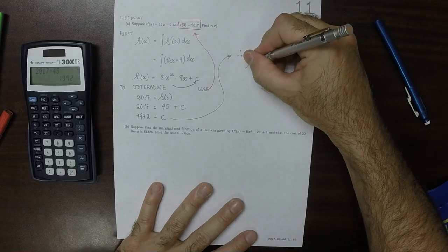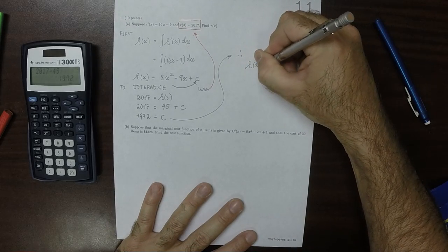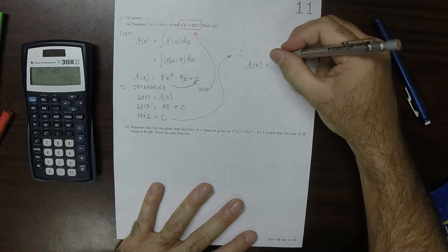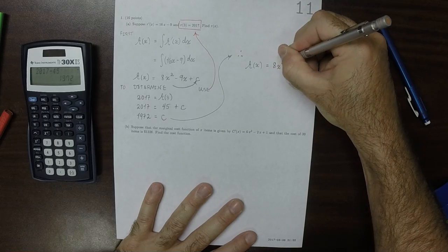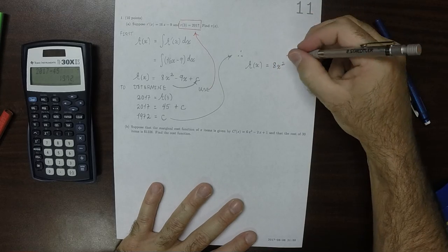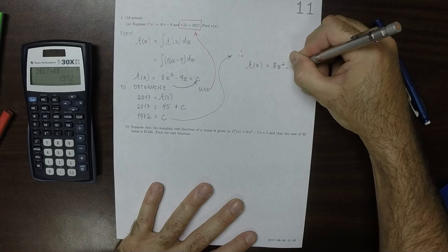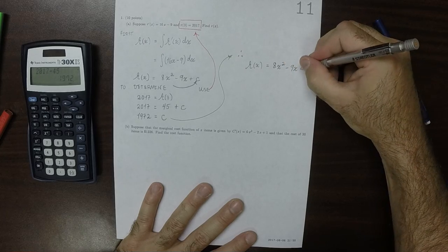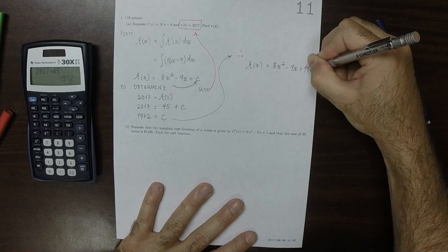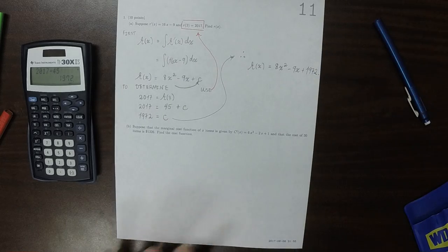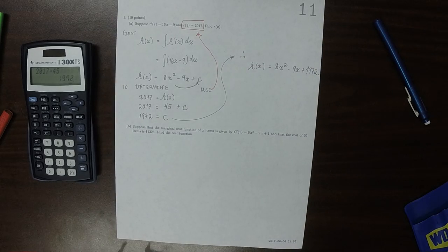And as a result, the answer is that r of x is equal to 8x squared, minus 9x, plus 1972. Okay.